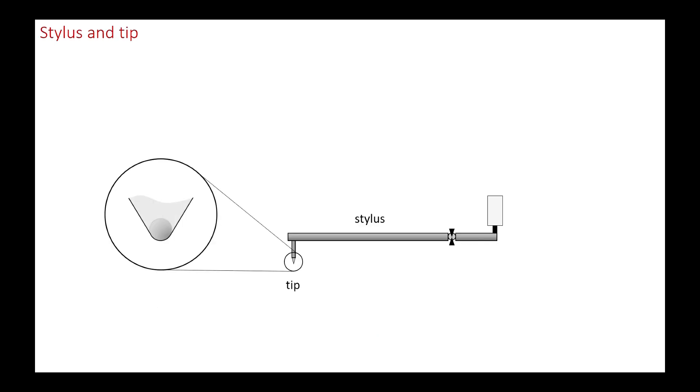The stylus itself is terminated by a tip consisting of a microscopic sphere of a few microns in radius. This sphere, often made of diamond or a hard stone like sapphire, is attached to a conical support. The hole constitutes a conospherical tip.